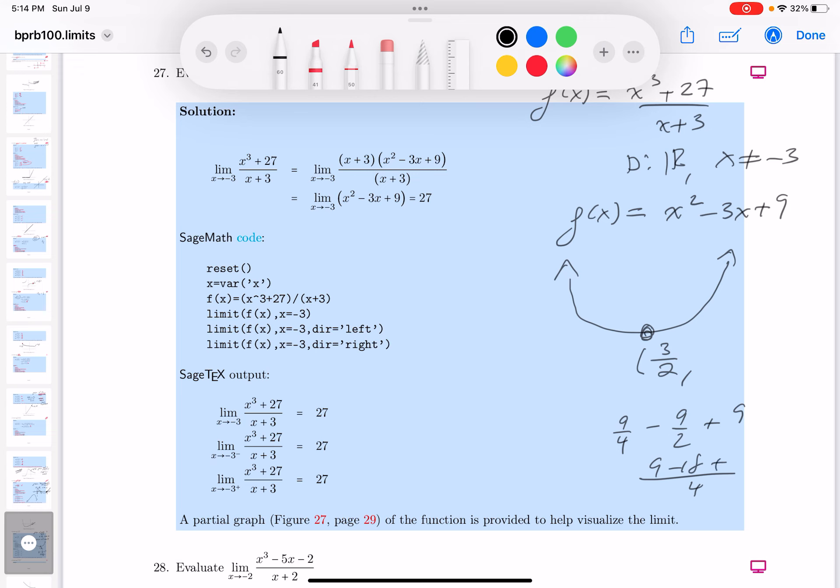9 minus 18 plus 36. And let's see, 9 minus 18 is -9, and -9 plus 36 is going to be 27.